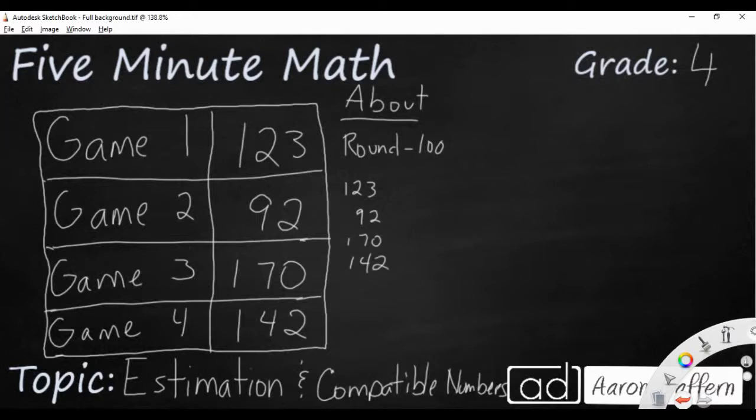If I round to the nearest hundred, I'm going to be looking at this two. That two is not going to be high enough. It has to be five or more. So 123 is actually closer to 100 than it is 200. There's nothing in the hundreds place on 92, but I can still look at that nine in the tens place, and it's definitely a lot closer to 100 than it is to zero.